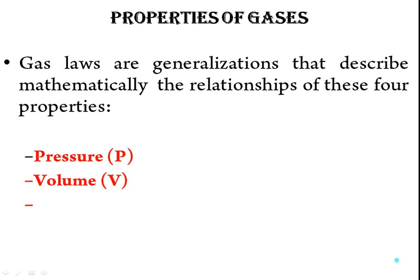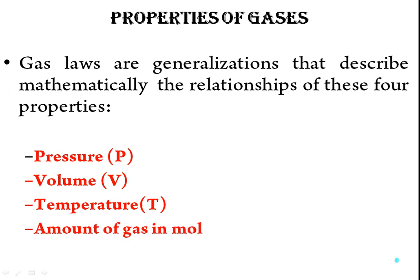Different gas laws describe mathematically the relationship between four properties. These four parameters are: first is pressure, second is volume, third is temperature, and last is the amount of gas in moles.